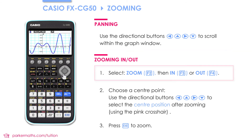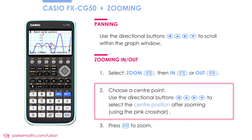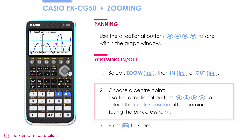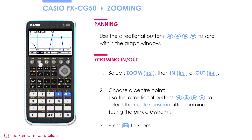I can also zoom in by pressing F2 to zoom and then F3 for in. However, it doesn't zoom straight away — it brings up a crosshair that you can move to wherever you'd like the center of your new zoom to be. When you're happy with where you've chosen, press EXE. In a similar way I can zoom out by pressing F2 and then F4, and I still have to choose a center point when zooming out as well.